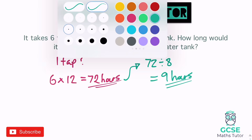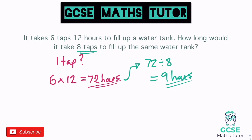Always think logically about these. If you took the wrong approach and did 12 hours divided by six, you'd get two, then two times eight gives you 16 — a longer amount of time. That doesn't make sense: more taps means less time. We're also assuming here that all taps run at the same rate. If they don't, it may take more or less time — the extra two taps could run faster or slower.